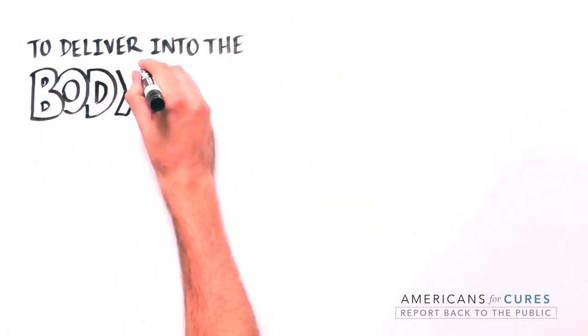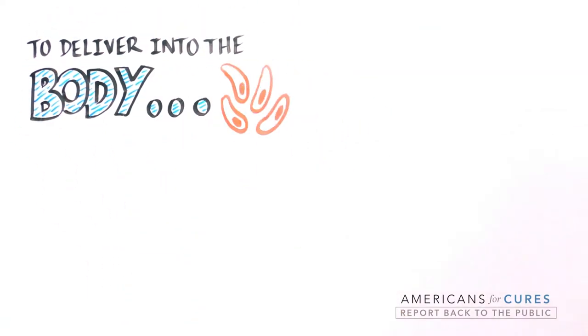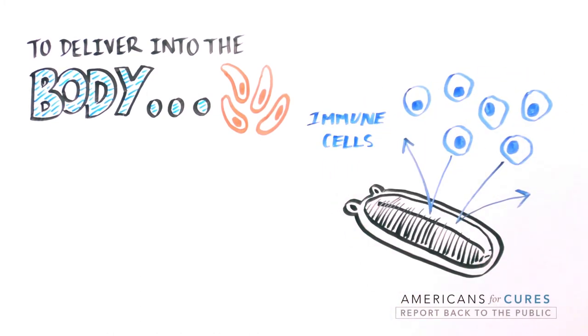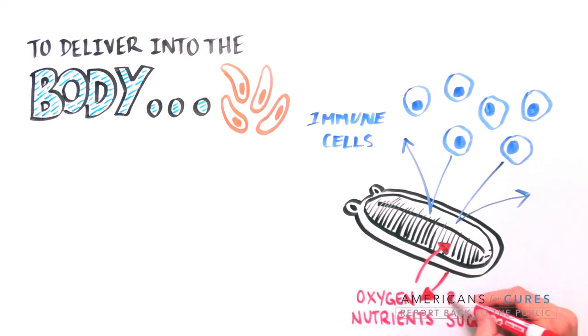In order to deliver these cells into the body, Biocyte scientists also engineered an encapsulation system designed to keep immune cells out, protecting the cells inside from destruction while allowing the free flow of oxygen, nutrients, sugar, and proteins.